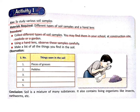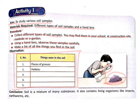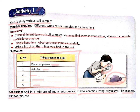Observe the samples carefully using a hand lens if it is available at your home. Make a list of all the things you find in the soil — make a table and record things seen in the soil. You can find pieces of grass, pebbles, twigs, dried leaves, and some insects. We conclude: soil is a mixture of many substances. It also contains living organisms like insects, earthworms, etc.